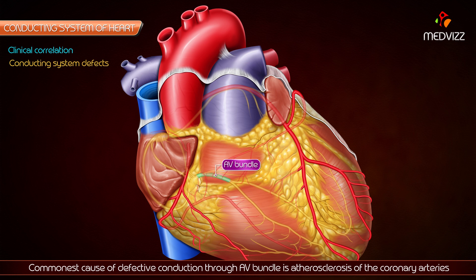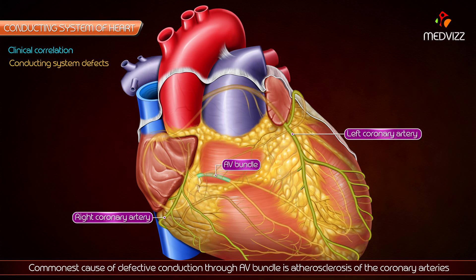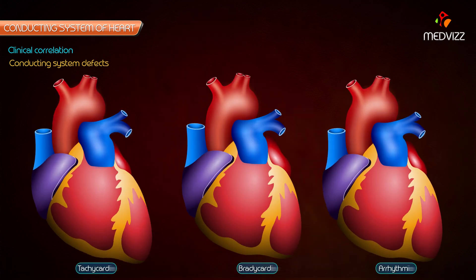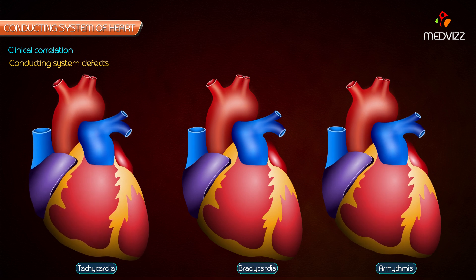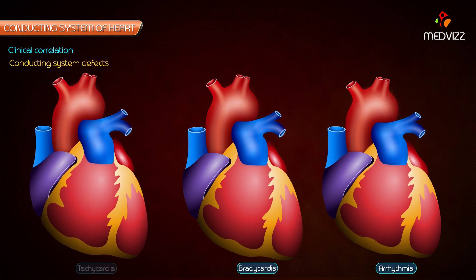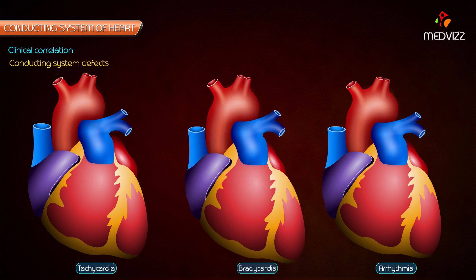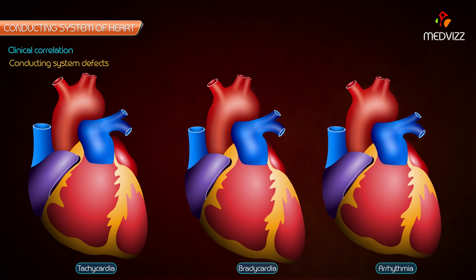The commonest cause of defective conduction through the AV bundle is atherosclerosis of coronary arteries, which leads to diminished blood supply to the conducting system. An important point to note is that a rapid pulse is called tachycardia, a slow pulse is called bradycardia, and an irregular pulse is called arrhythmia.